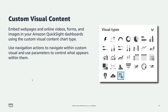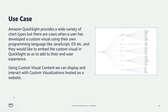In QuickSight, we have a custom visual content type. If you've seen the console, it appears at the bottom as the last visual chart type, highlighted in blue. Using this custom visual content type, you can embed web pages, online videos, forms, or images. Many people are already using this to embed content hosted externally.